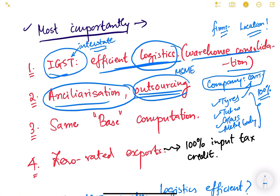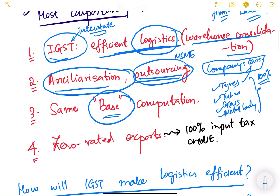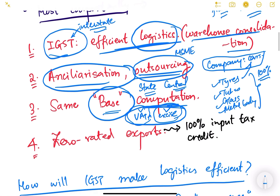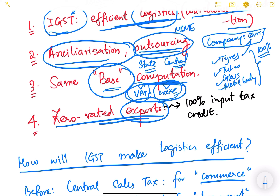Ancillerization has led to increased MSME industries — small and medium-sized industries can become ancillary suppliers to big industries, supplying small parts or inputs. More businesses have come up, outsourcing has increased, more jobs have been created. There is also same base computation — both state and central taxes are now applied on the same cost. Additionally, exports have been zero-rated under GST, with 100% input tax credit available to exporters.